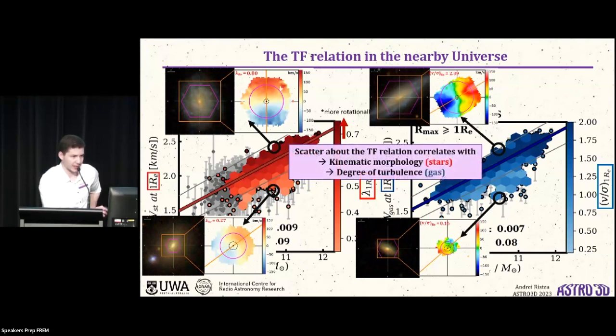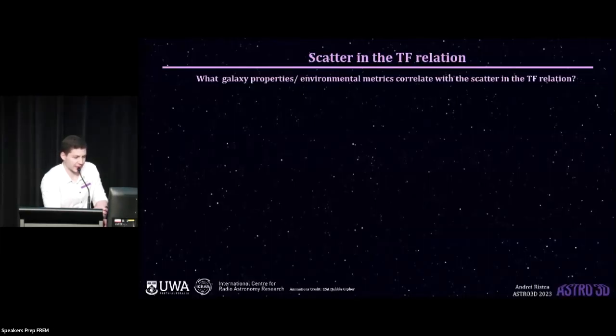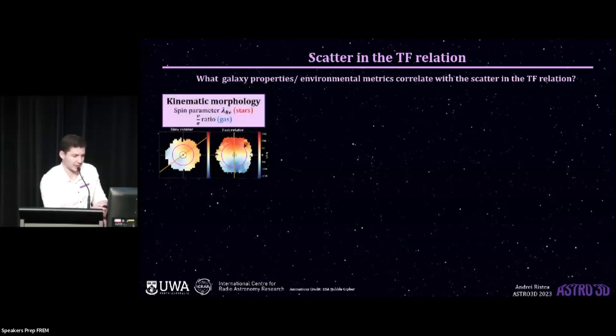Right, so we see from this that the scatter in the velocity direction in the Tully-Fisher seems to correlate very well with kinematic morphology for stars and the degree of turbulence for gas, which in this plot I should have said was parametrized to the V over sigma ratio. Right, so a larger value means a less turbulent gas disk. But the question is, are there any other parameters or any other processes that contribute to this scatter? And in this study I've looked at a whole suite of parameters which might contribute to the scatter in the Tully-Fisher. I've looked of course at the kinematic morphology, which I just mentioned earlier, through the lambda RE and V over sigma parameters.